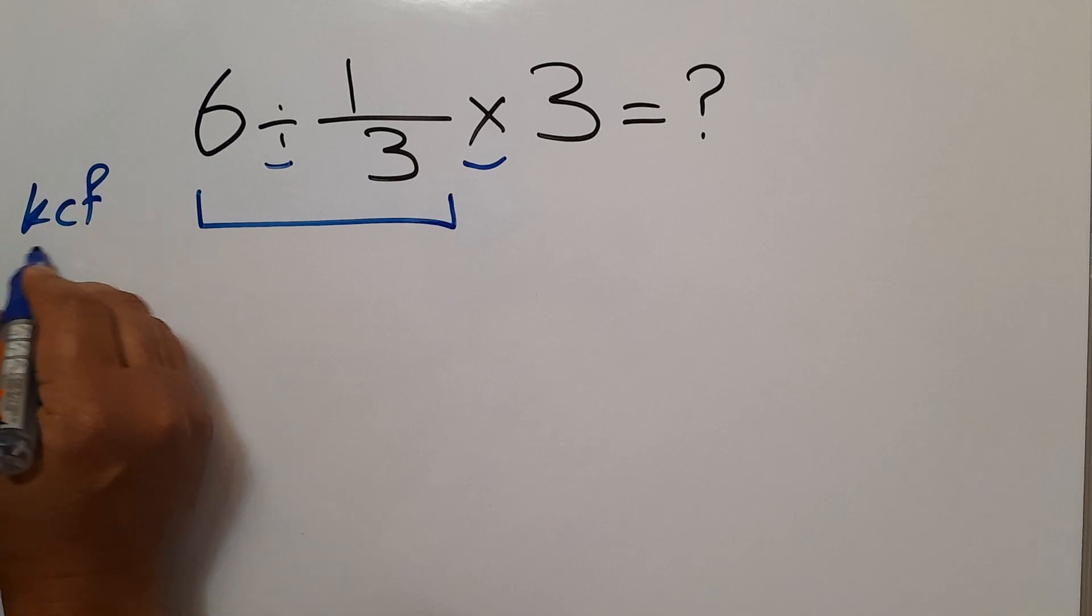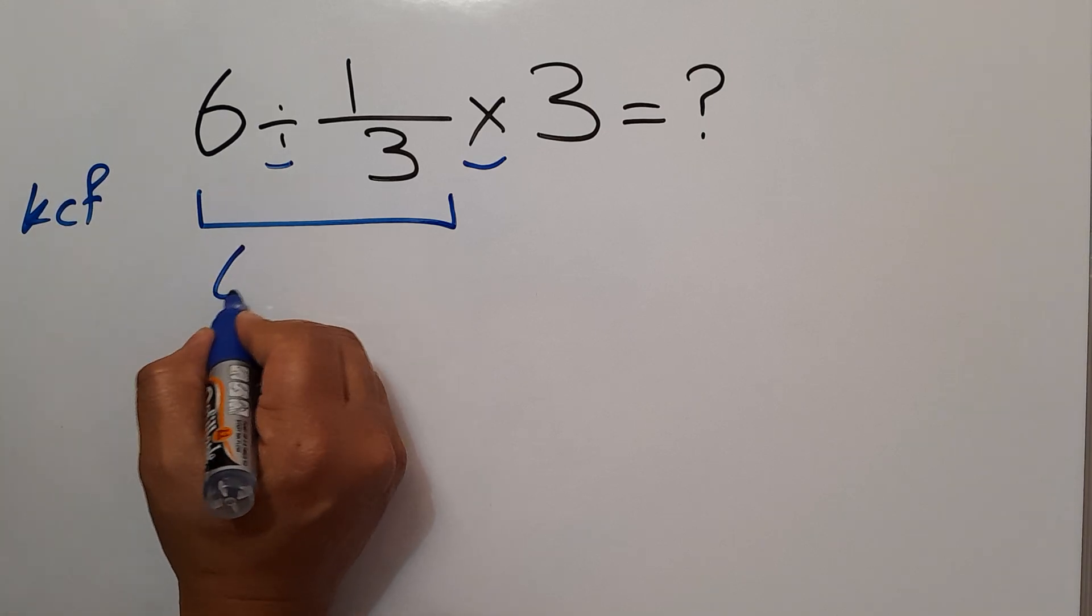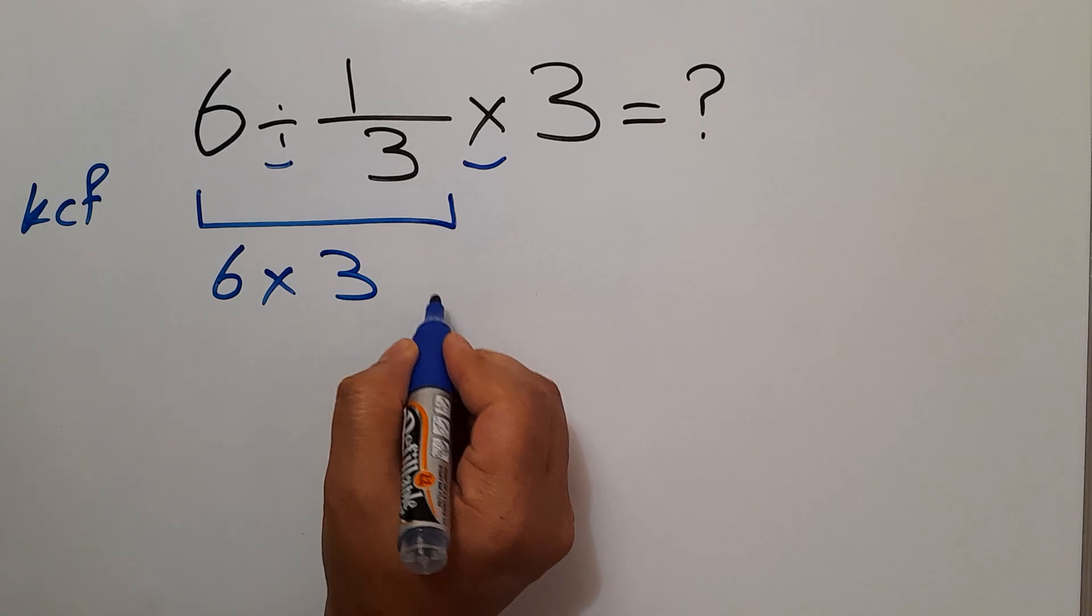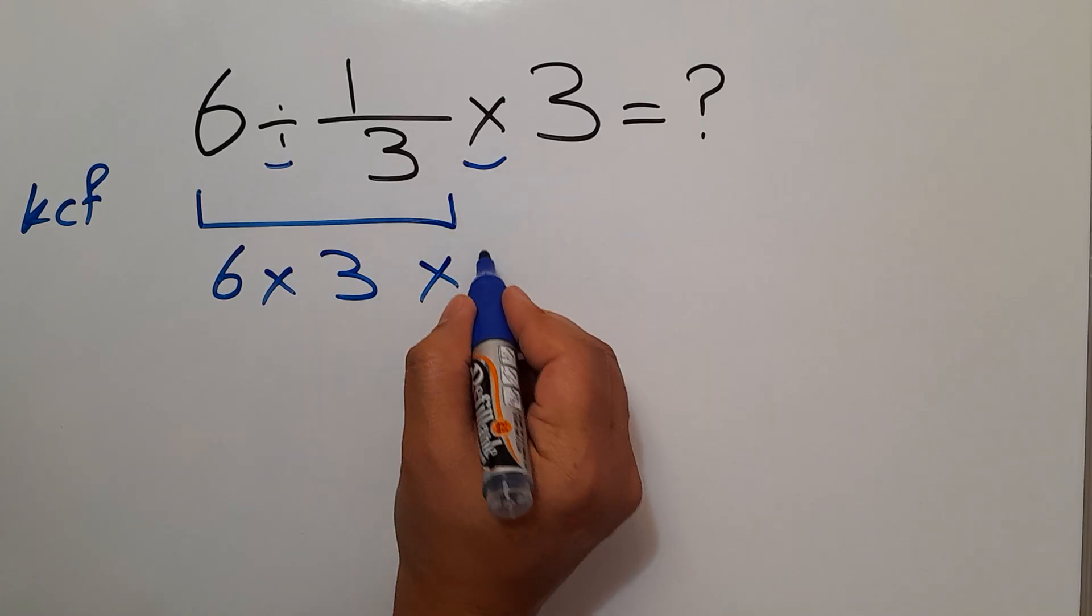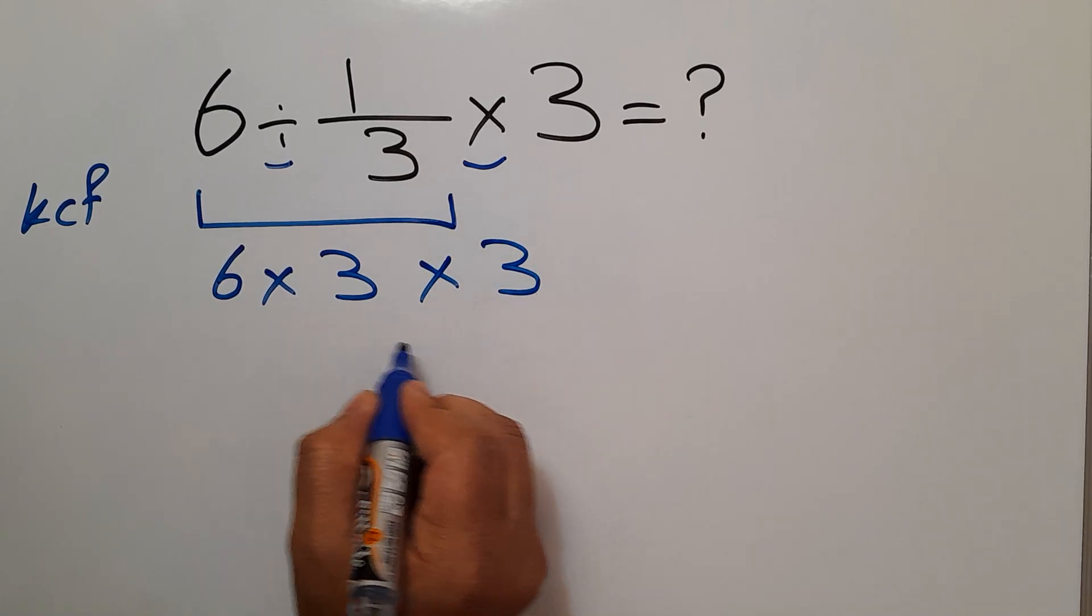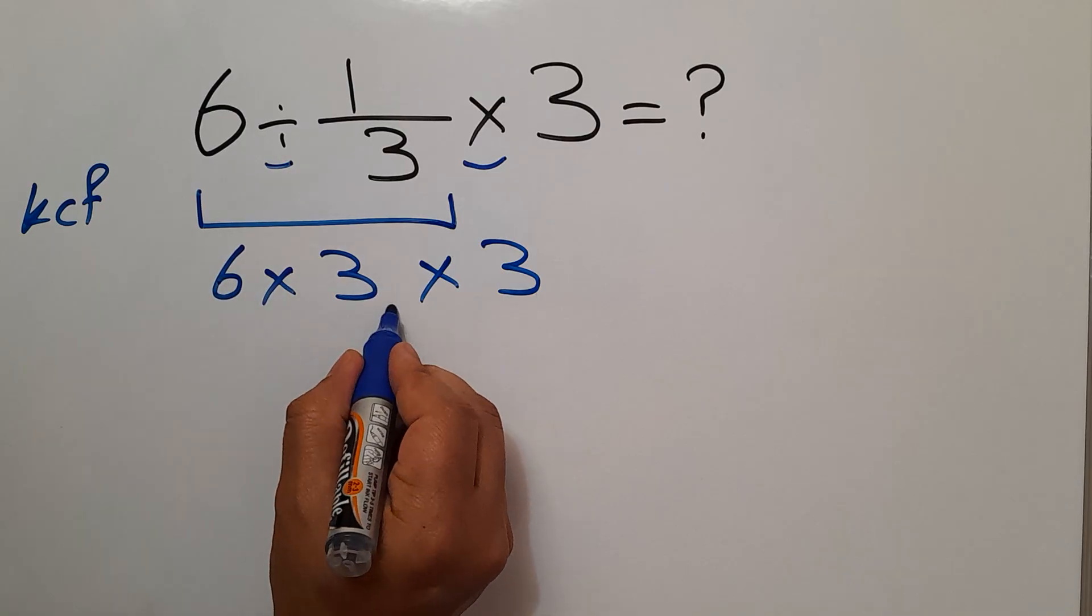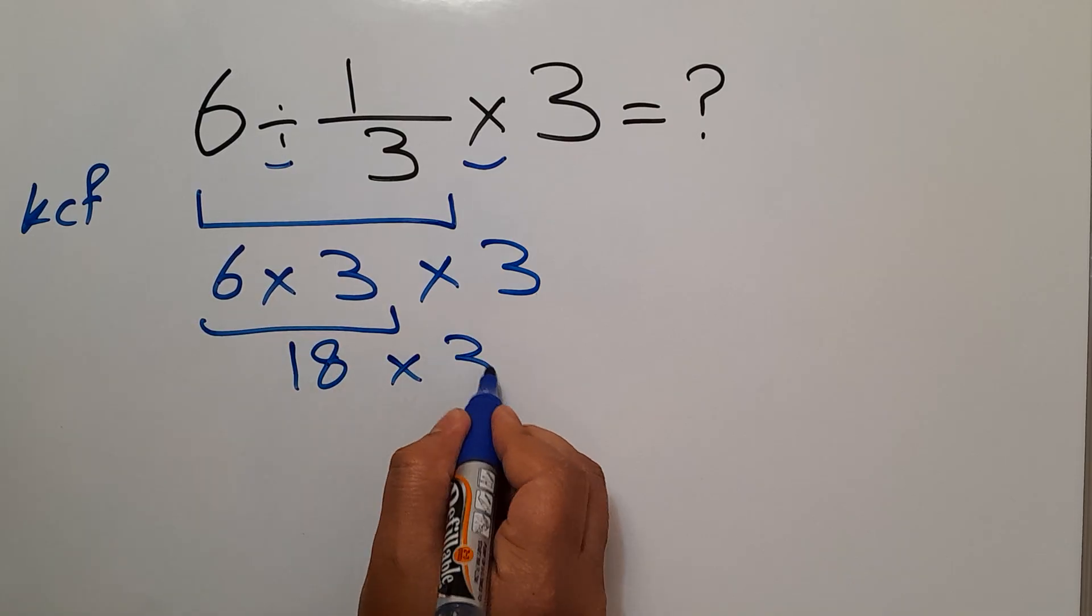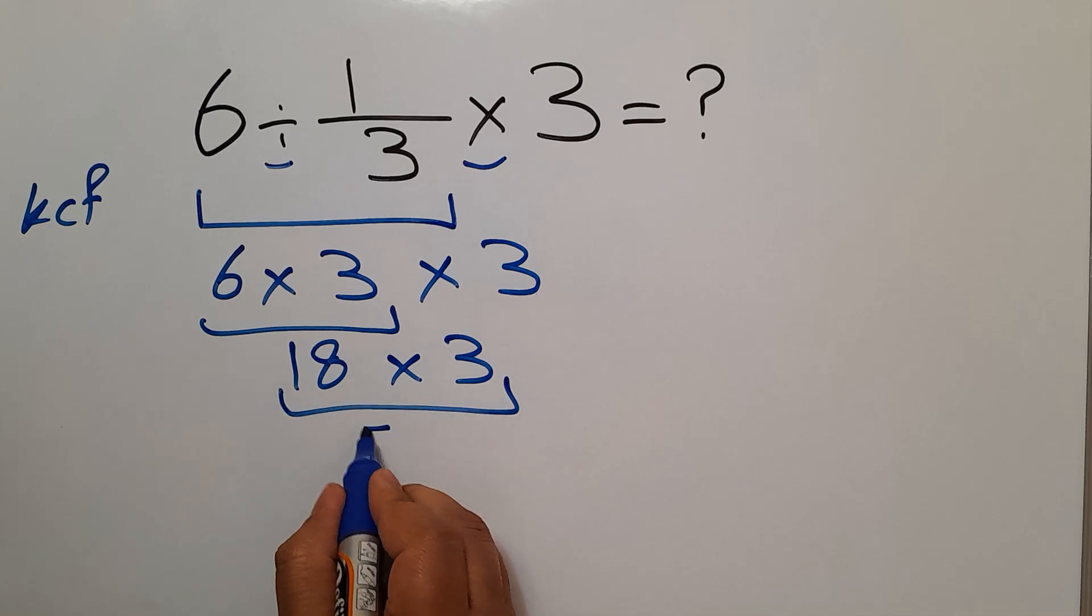According to this rule, it can be written as 6 times 3, and again times 3. 6 times 3 equals 18, and 18 times 3 gives us 54.